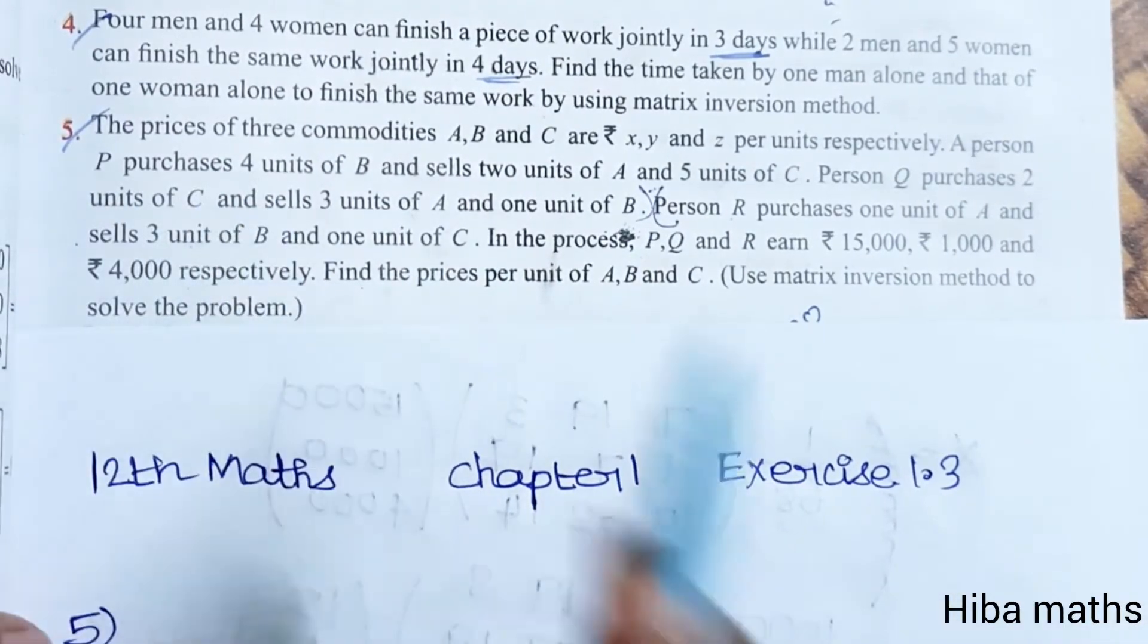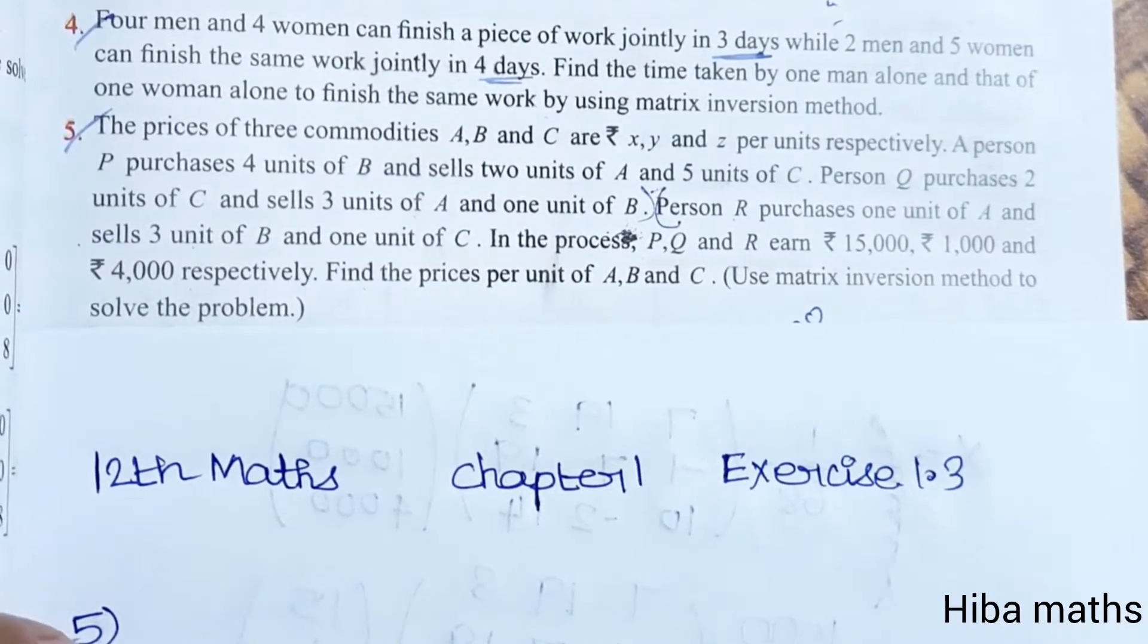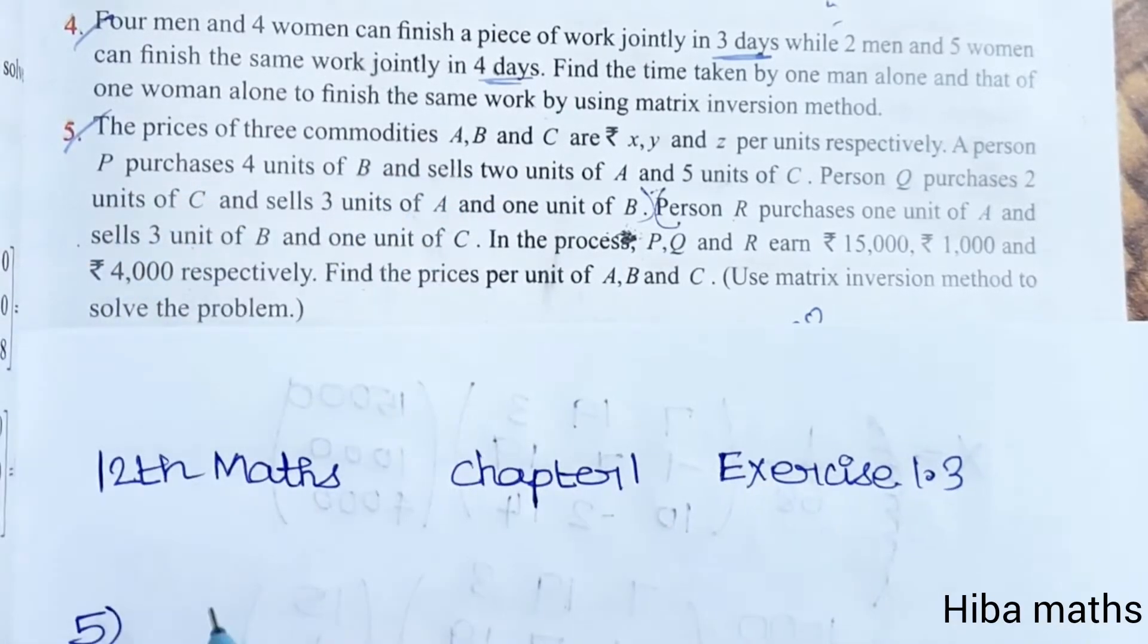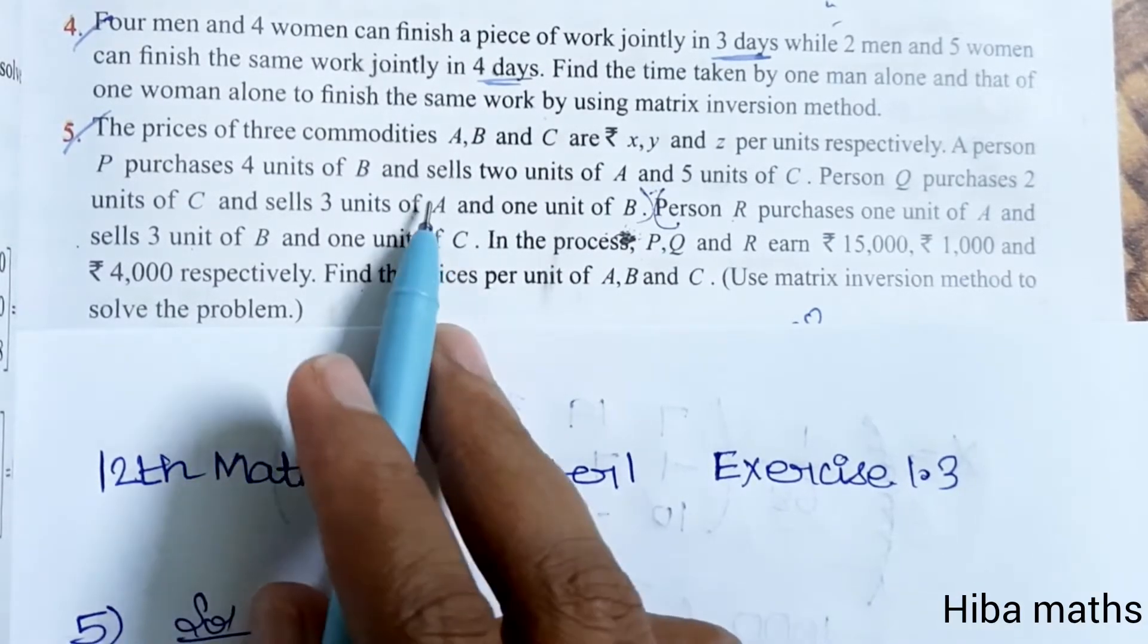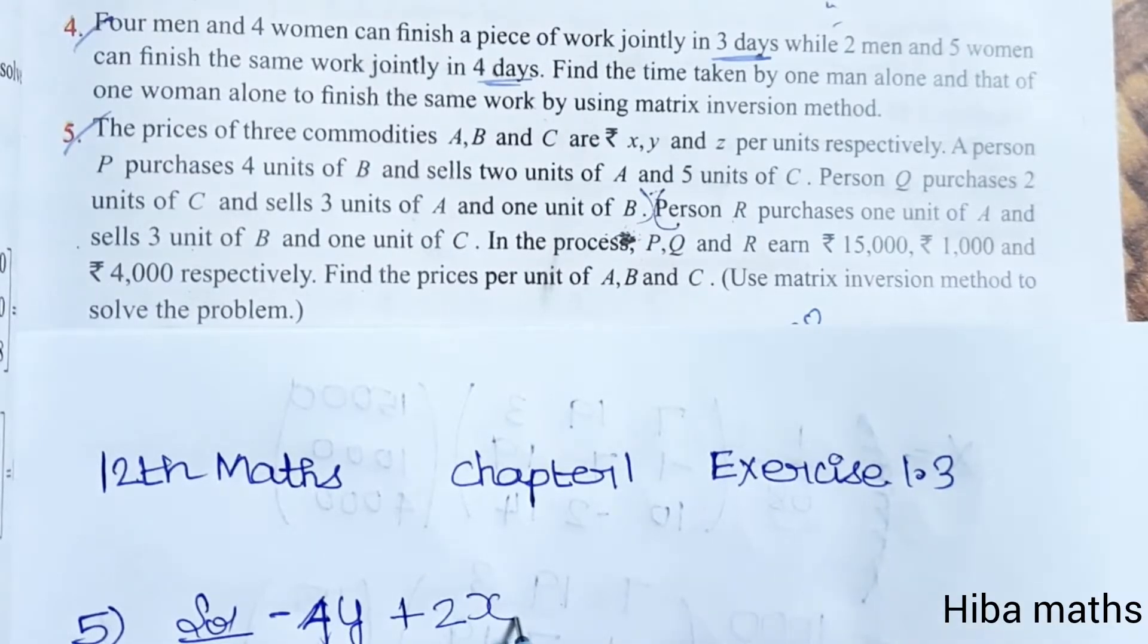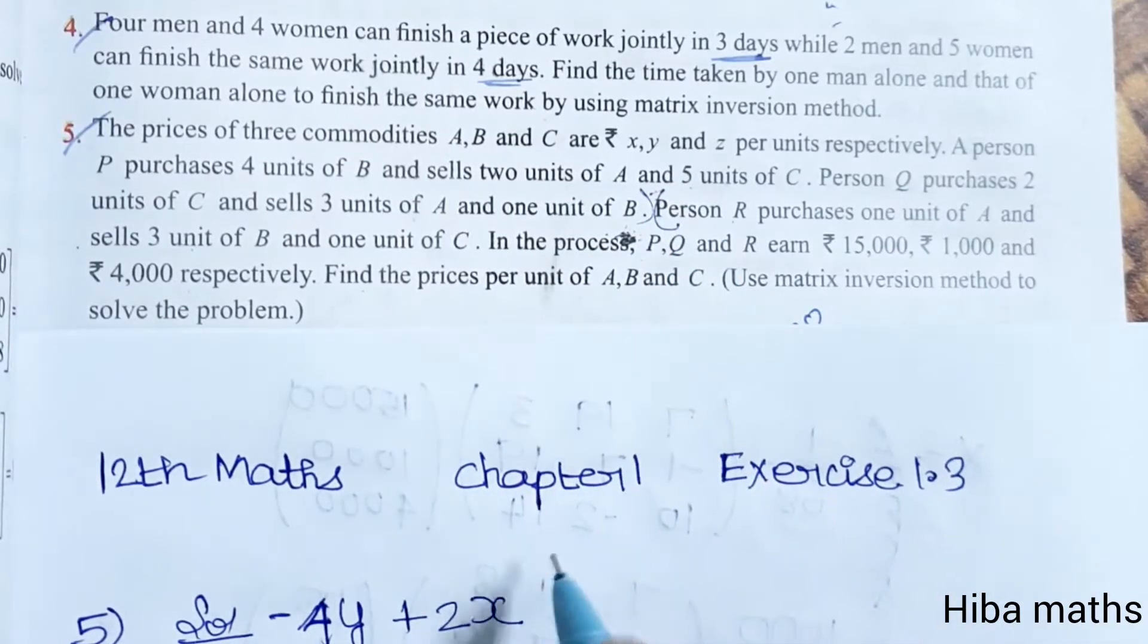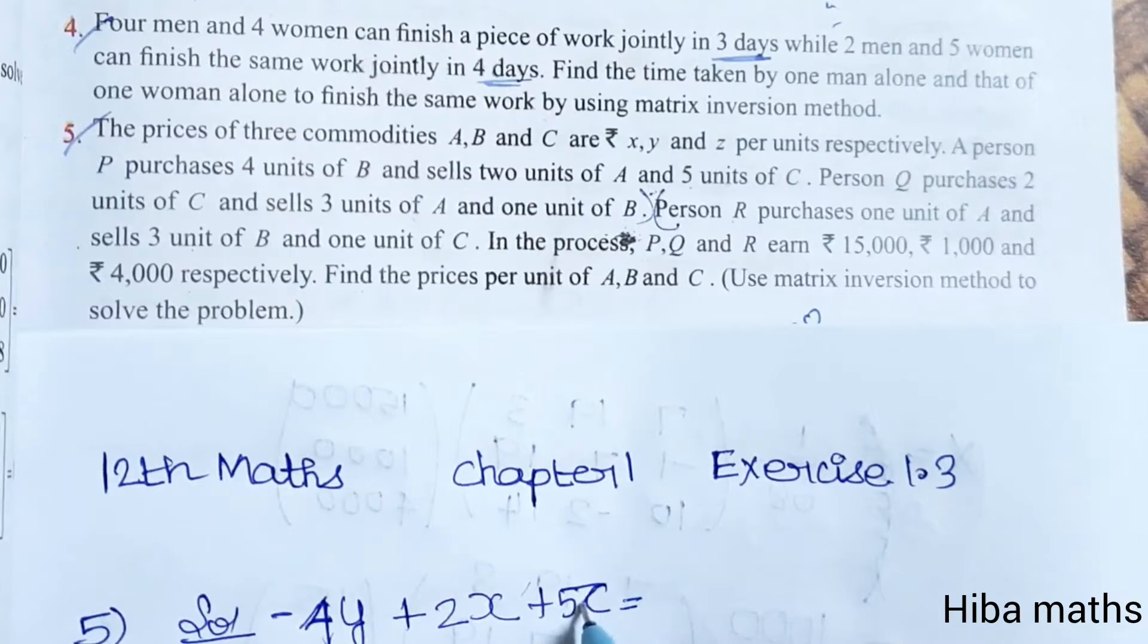A person P purchases 4 units of B and sells 2 units of A and 5 units of C. Purchases is minus value, sells is plus. So purchases 4 units of B is minus 4Y, and sells 2 units of A and 5 units of C is plus 2X plus 5Z.